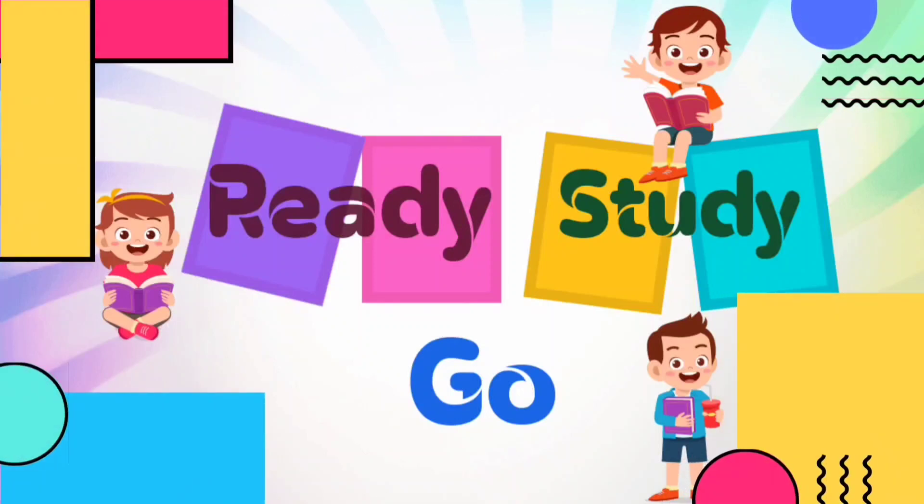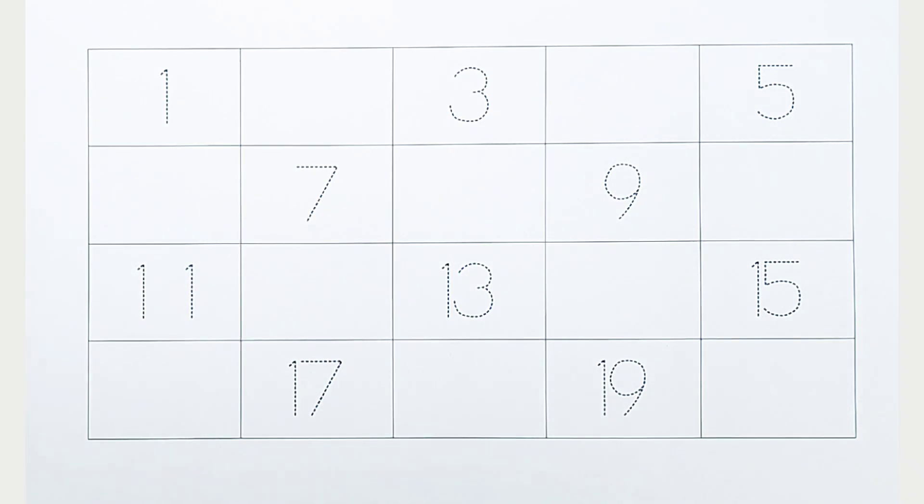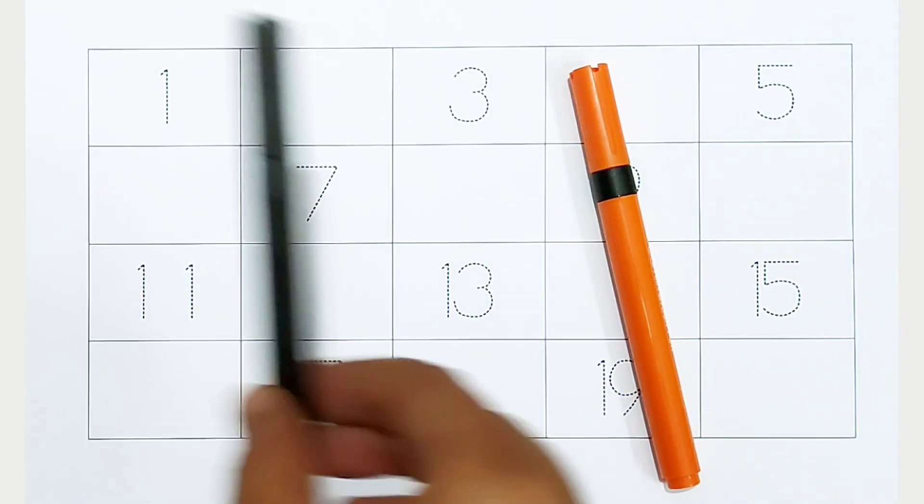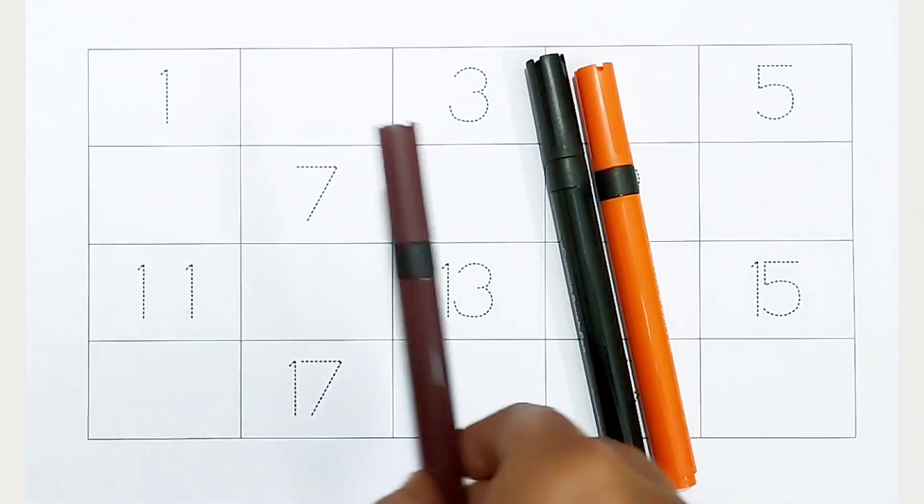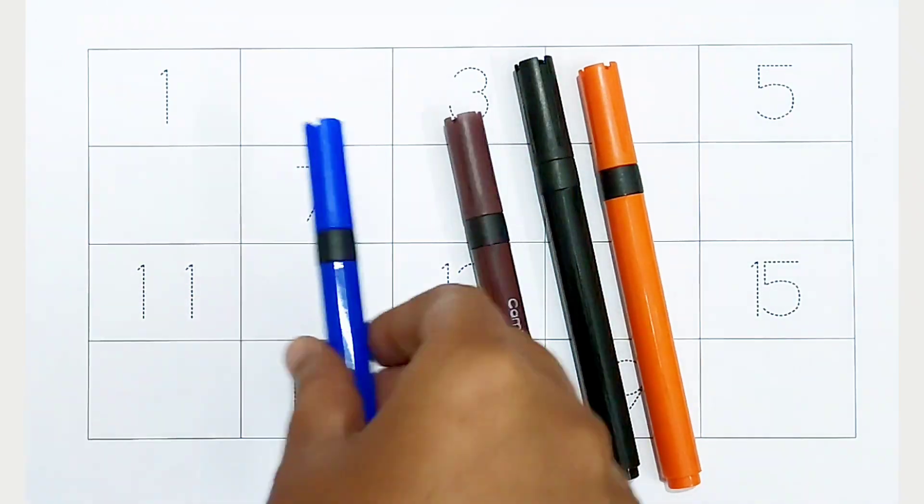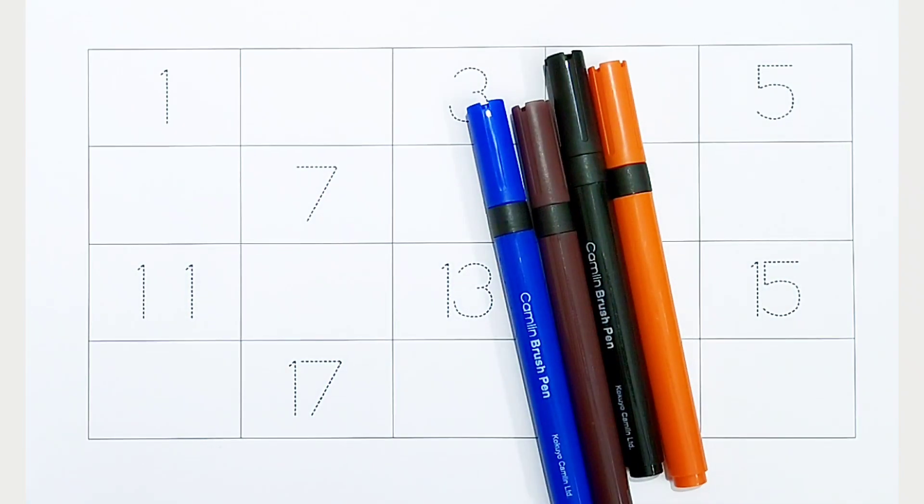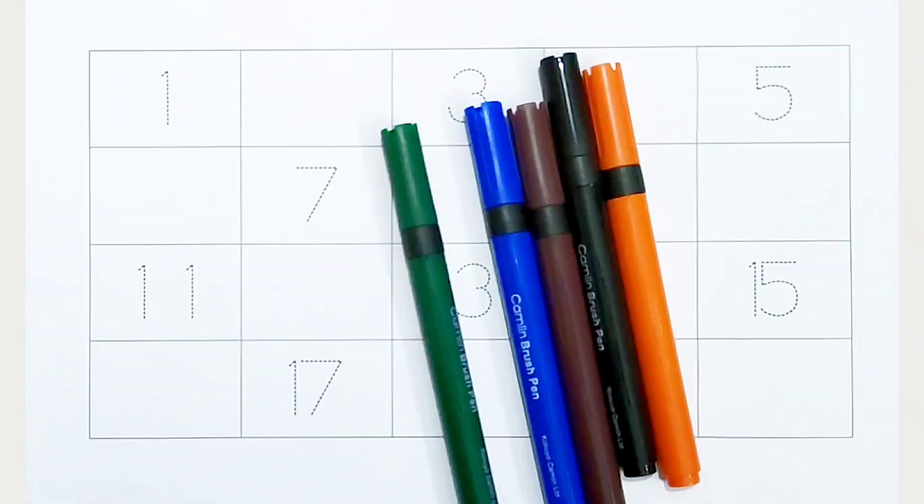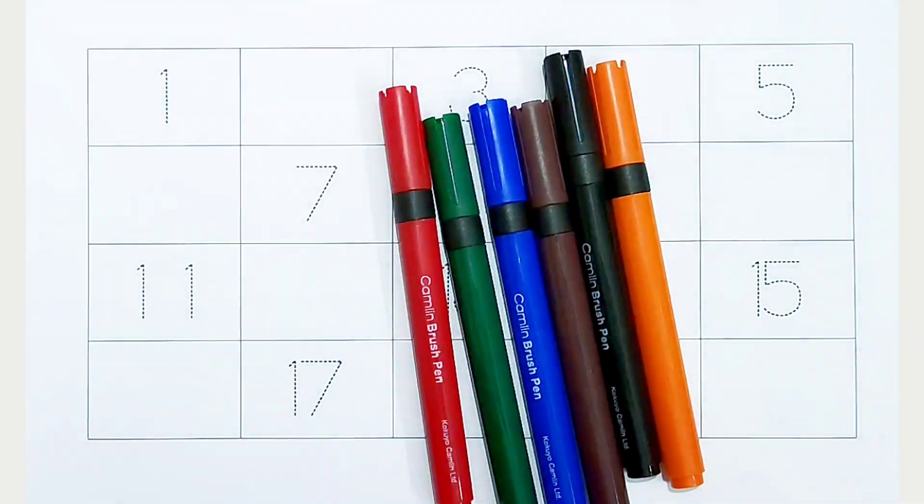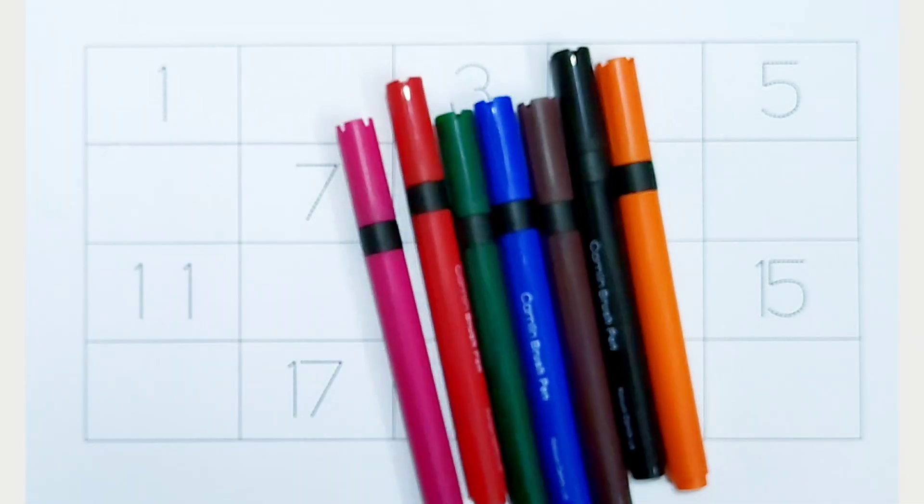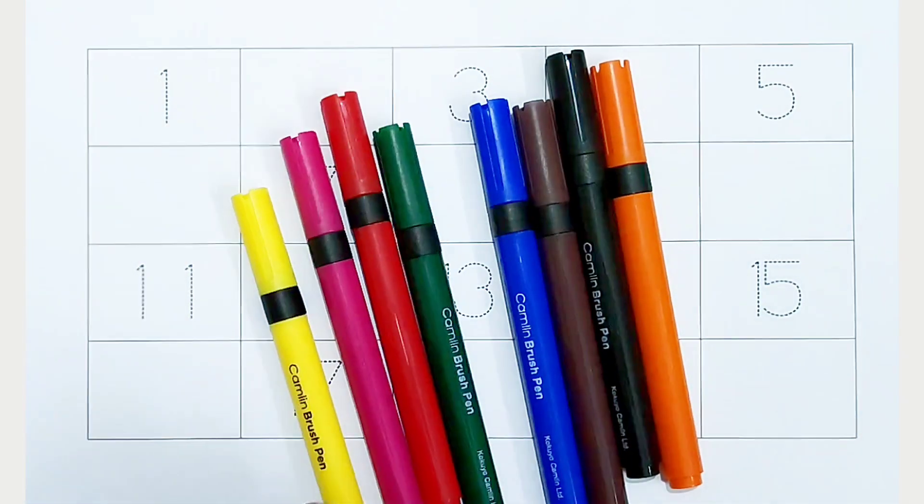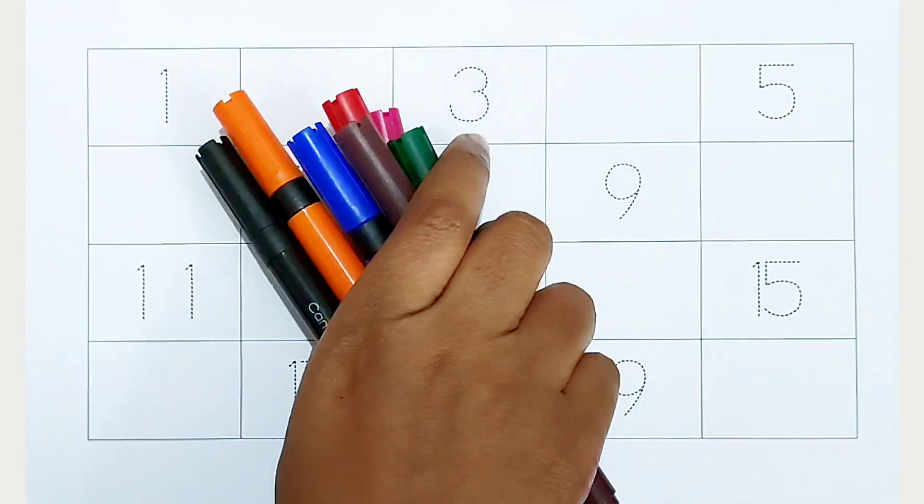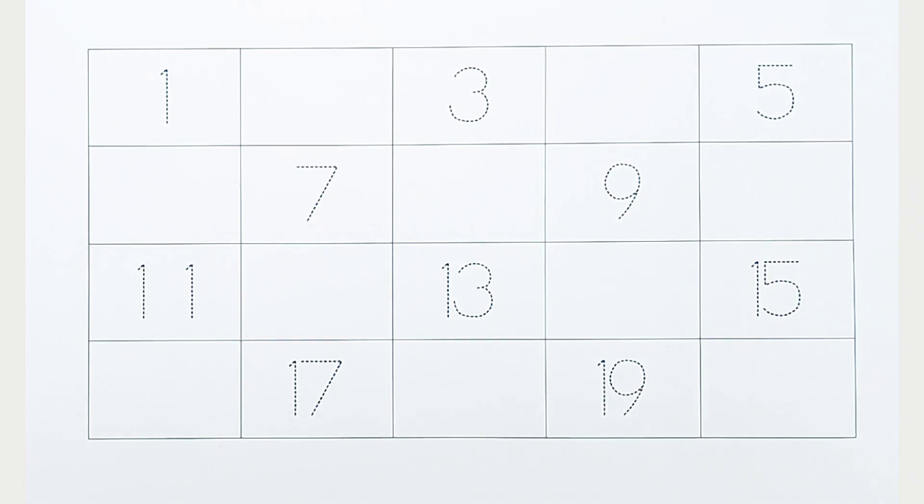Ready, study, go! Orange color, black color, brown color, blue color, green color, red color, pink color, yellow color. Hi kids, today we can learn the numbers from 1 to 20.